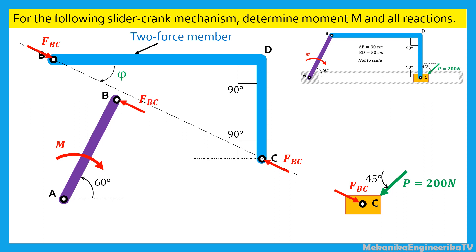The slider C is connected to the ground using a prismatic or translating kinematic pair. Neglecting friction, the ground applies a normal force CN on the slider C to balance the forces FBC and P. The bar AB is connected to the ground in A using a revolute or rotating kinematic pair. Therefore, the ground applies a reaction force in A. This reaction in A should have the same magnitude but the opposite direction as the force FBC in B, to satisfy the forces equilibrium of the bar AB.